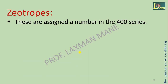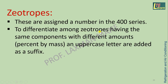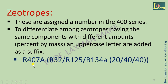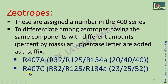Zeotropes are assigned a number in the 400 series. To differentiate among zeotropes having the same components with different amounts, an uppercase letter is added as a suffix. For example, R407A — where A is the uppercase letter used as a suffix — is a mixture of three refrigerants in specific percentage concentrations. Similarly, there are other zeotrope refrigerants in this category.